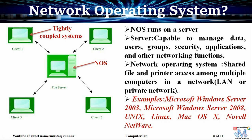Now coming to the network operating system. We know that a network is a group of computers. The network may consist of a server as well as clients. Usually, the network operating system is installed on the server. The server is a computer which is capable of managing data, users, and resources. All clients are connected to the server, and the operating system residing on the server is used to share files and resources. A few examples of network operating systems are Microsoft Windows Server 2003, Microsoft Windows Server 2008, Unix, Linux, Mac OS X, and Novell NetWare.